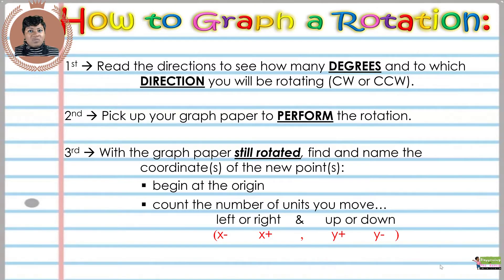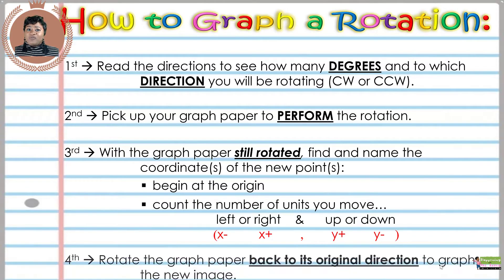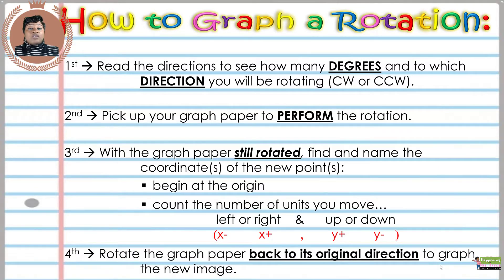You're going to begin at the origin and count the number of units you move — first left or right, then up and down. Left or right denotes movement on the x-axis: moving left means x is negative, moving right means x is positive. Up or down denotes the y-axis: above zero are positive y values, and below zero are negative y values. Fourth and final, you will rotate the graph paper back to its original direction to graph the new image.